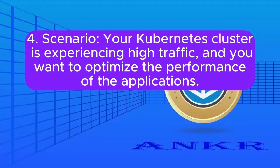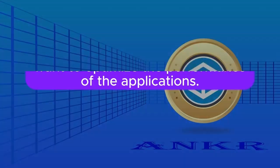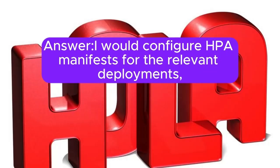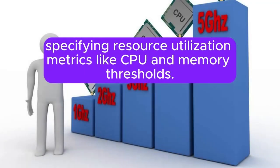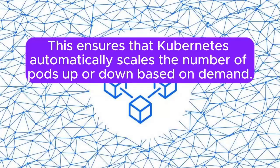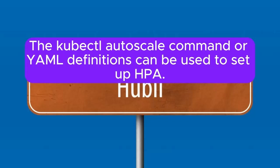Scenario 4: Your Kubernetes cluster is experiencing high traffic, and you want to optimize the performance of the applications. How would you use Horizontal Pod Autoscaling (HPA) to dynamically adjust the number of pods based on resource utilization metrics? Answer: I will configure HPA manifests for the relevant deployments, specifying resource utilization metrics like CPU and memory thresholds. This ensures that Kubernetes automatically scales the number of pods up or down based on demand. The kubectl autoscale command or YAML definitions can be used to set up HPA.